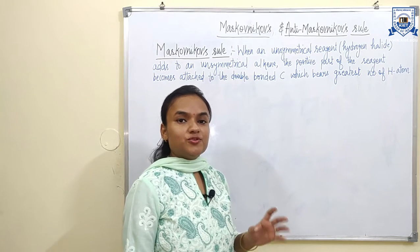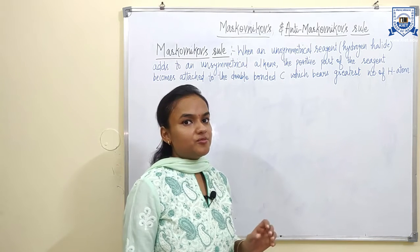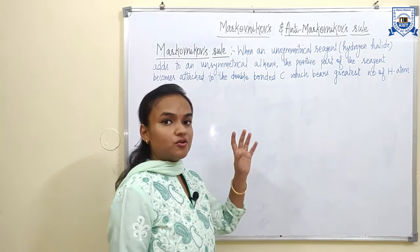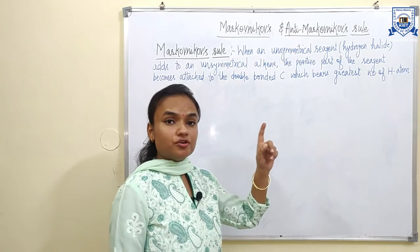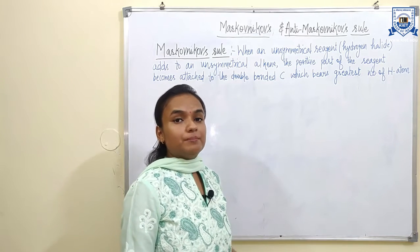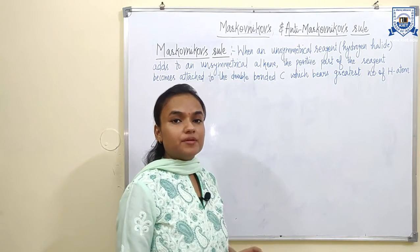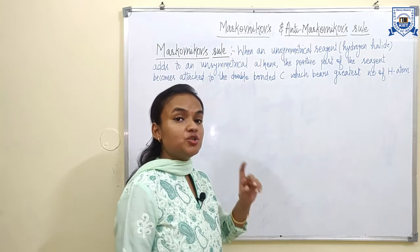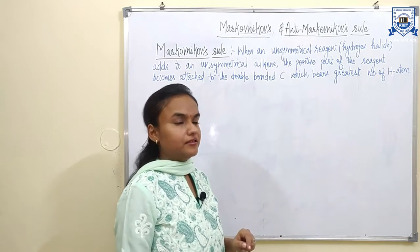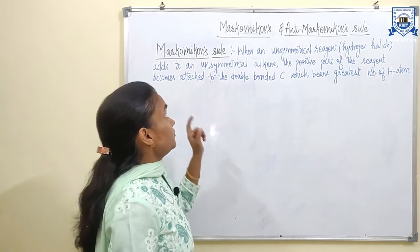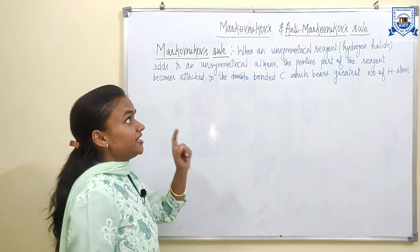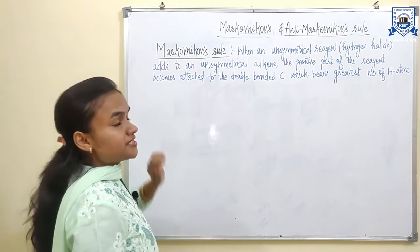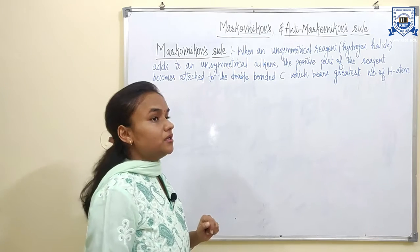Hello students. In today's lecture I am going to discuss about a very interesting topic: Markovnikov rule and anti-Markovnikov rules. Basically these two rules are applicable for the addition of an unsymmetrical reagent to an unsymmetrical alkene. So we will discuss Markovnikov's rule and anti-Markovnikov rule one by one. First we will see what is Markovnikov's rule.